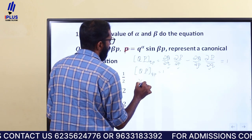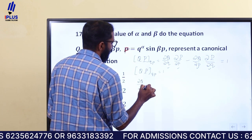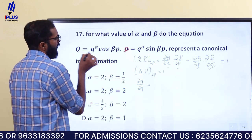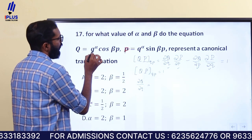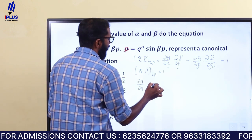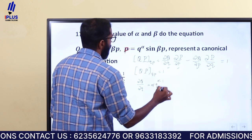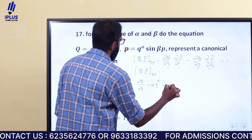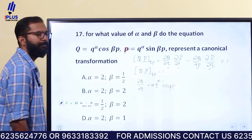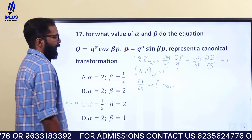dou Q divided by dou q is equal to alpha times q raised to alpha minus 1 into cos(beta p).